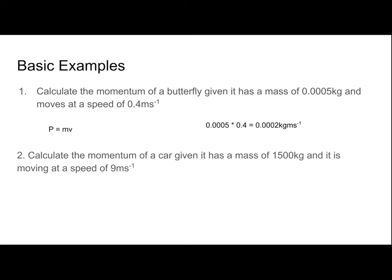Once we multiply them together, we get 0.0002 kg·m/s as our final answer. Question number two: calculate the momentum of a car given it has a mass of 1,500 kilograms moving at a speed of 9 meters per second. Applying p = mv, 1,500 times 9 gives us 13,500 kg·m/s.